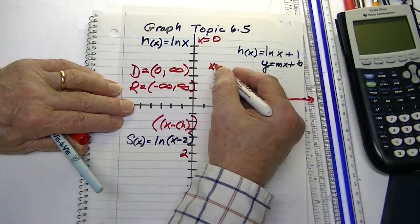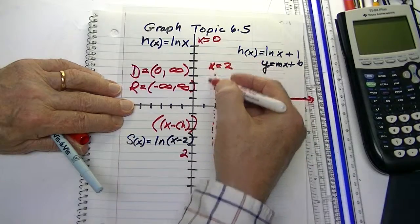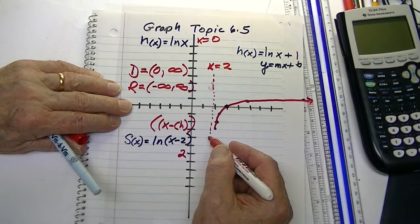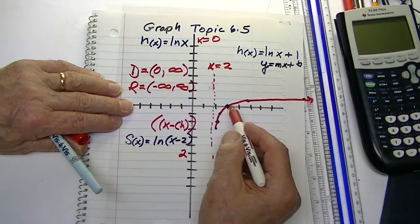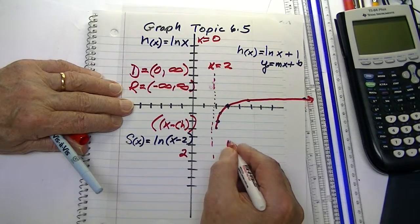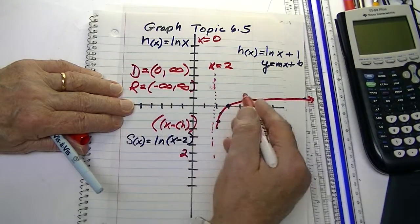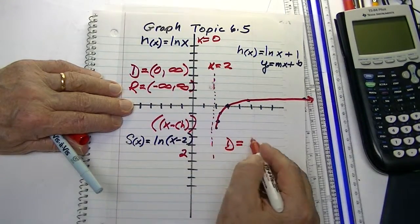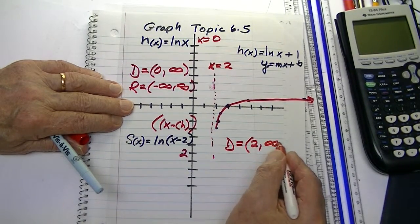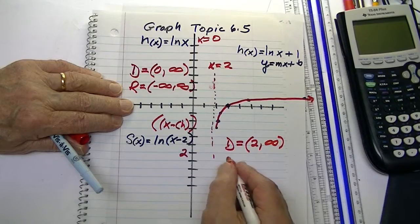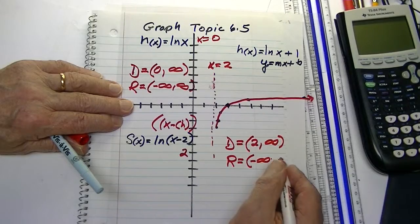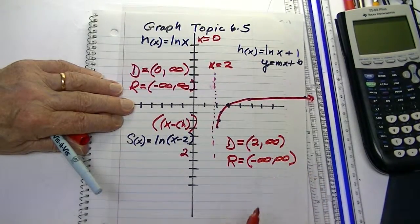It was x equals zero, which is the equation for your actual y-axis. Now it becomes x equals two, our new vertical asymptote. And what would be the domain and range of this? Well, the domain now is shifted because it never quite reaches two and goes to positive infinity, while the range remains the same, negative infinity to positive infinity.